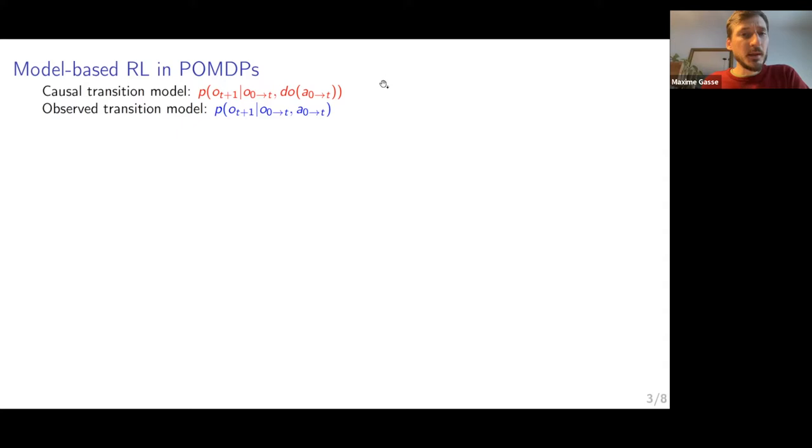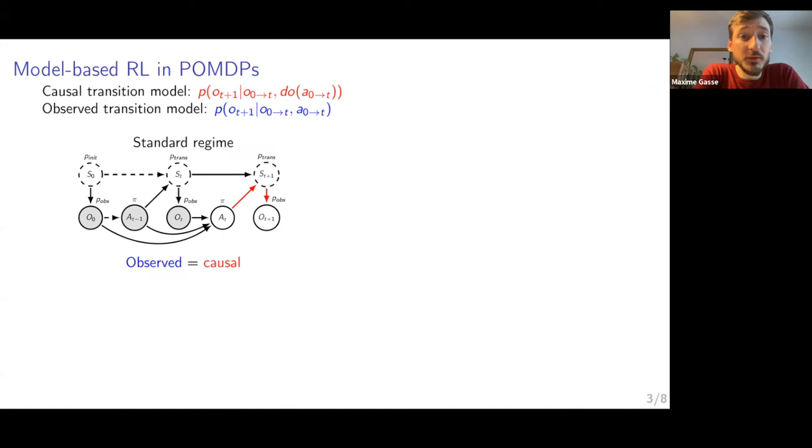But if you observe trajectories in an offline dataset where you know nothing about the agent that took actions, you have this observational distribution, this observed transition model, which might not be causal.